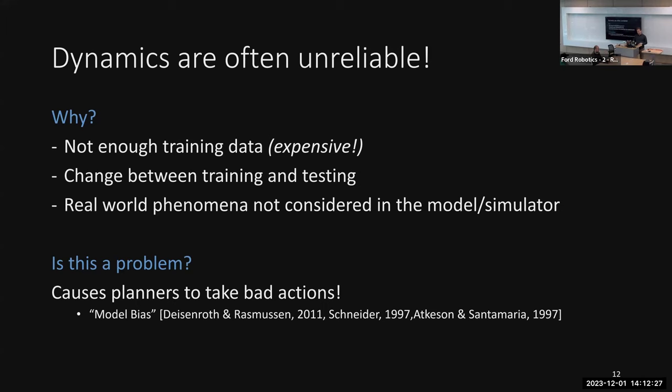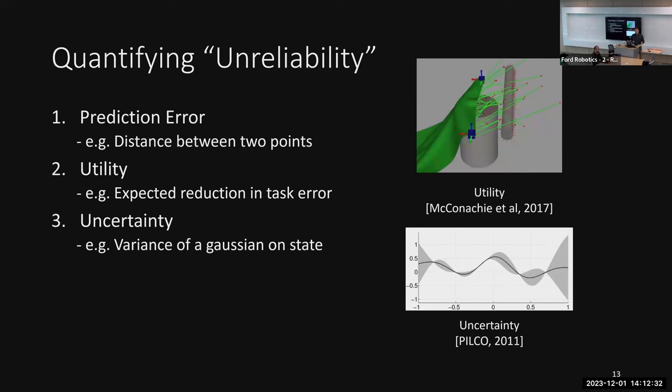What does unreliability mean quantitatively? There are three possible ways to quantify reliability: prediction error (e.g., distance between two predicted and true shapes), utility (expected reduction in task error), or uncertainty (e.g., a Gaussian over state variables). These are all reasonable. In this talk, we focus mostly on prediction error.